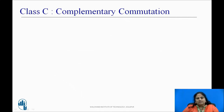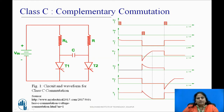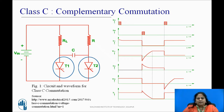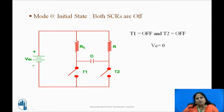Let us now discuss class C type commutation method. It is also known as complementary commutation method. The figure shows the circuit and waveform for class C type commutation method. Here, SCR T1 is the main thyristor and is connected in series with the load RL. SCR T2 is the complementary thyristor connected in parallel with the main thyristor T1 and is used to commutate T1. The whole commutation process is explained in different modes of operation.